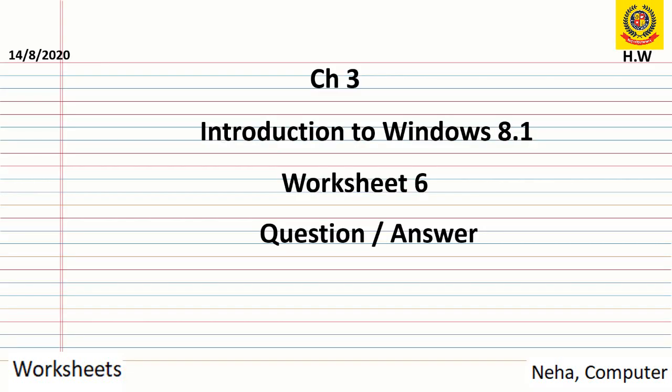Moving to worksheet 6. We have to do the question answer of worksheet 6 in the notebook, following the same pattern as shown in the video. First, write the date on the left-hand side and homework on the right-hand side. First line: write Chapter 3. Second line: write the name of the chapter — Introduction to Windows 8.1. Third line: Worksheet 6. Fourth line: Question Answer.